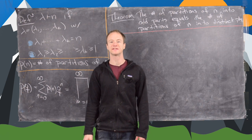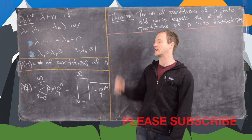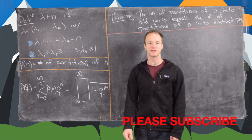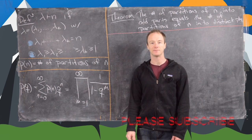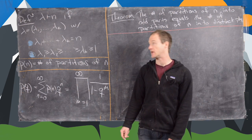This is the fourth in a series of videos where we're exploring integer partitions, leading up to a proof of the Rogers-Ramanujan identities.